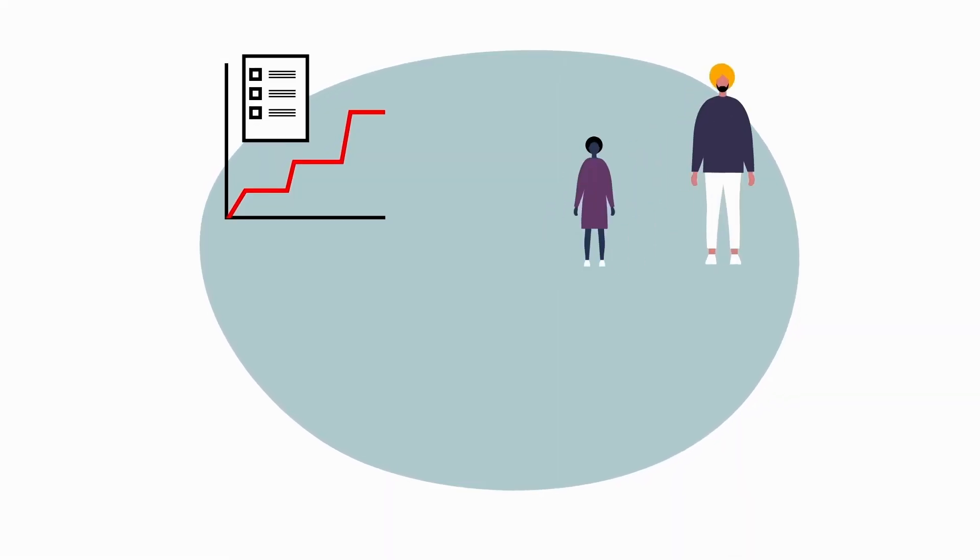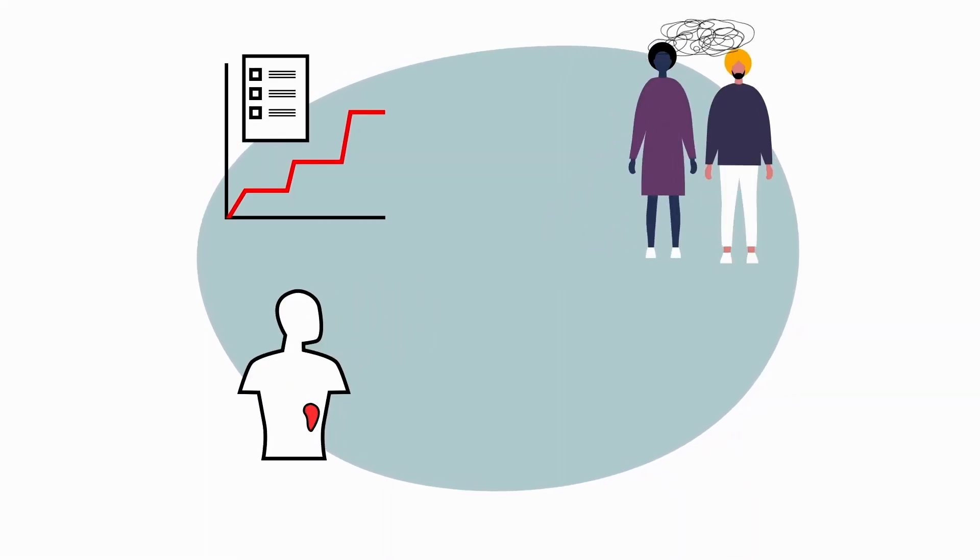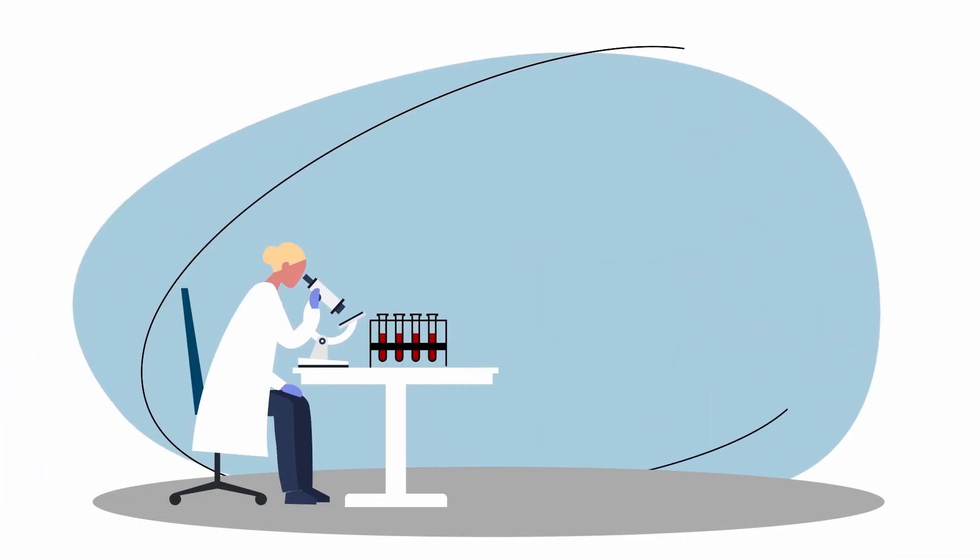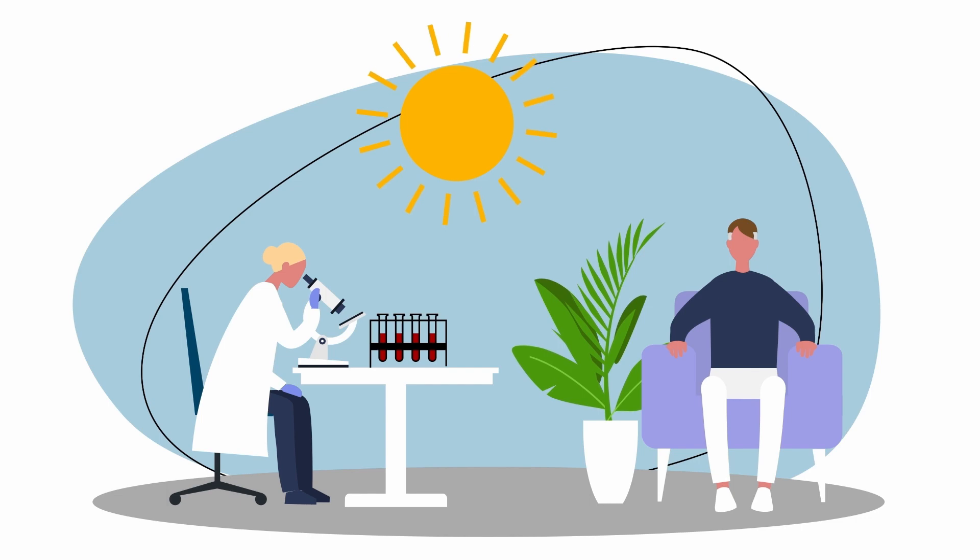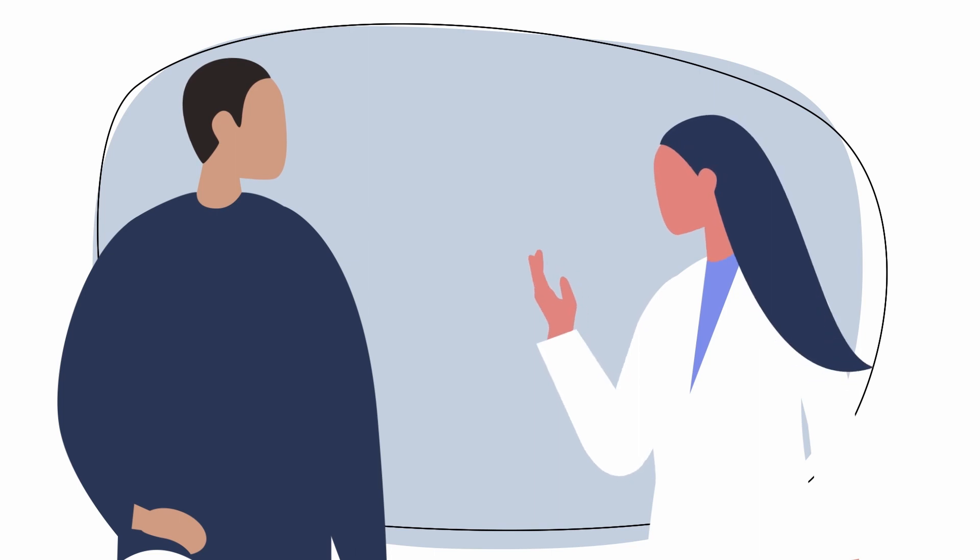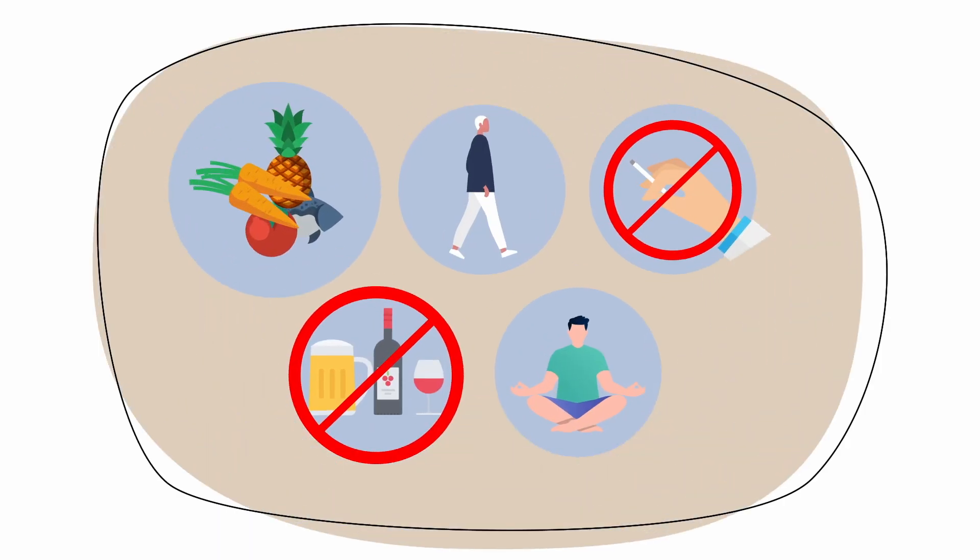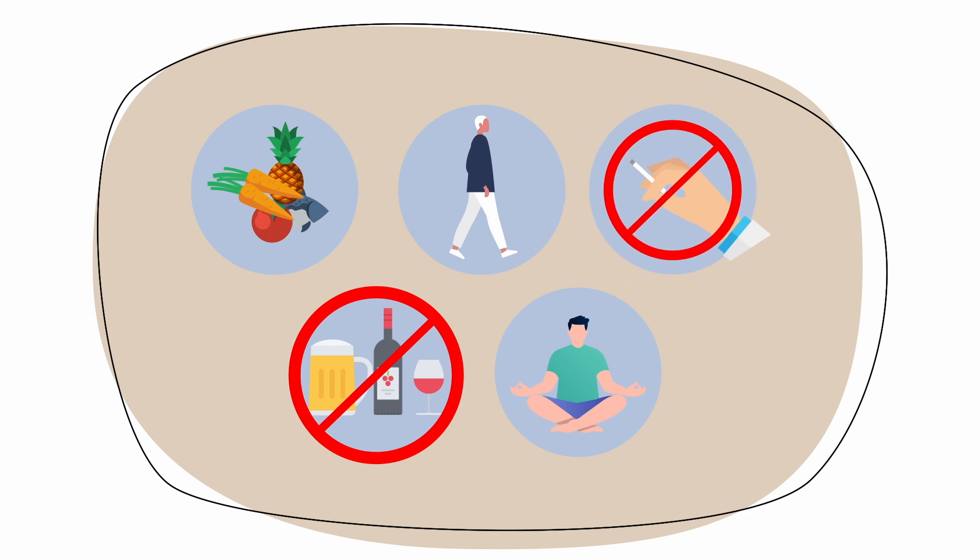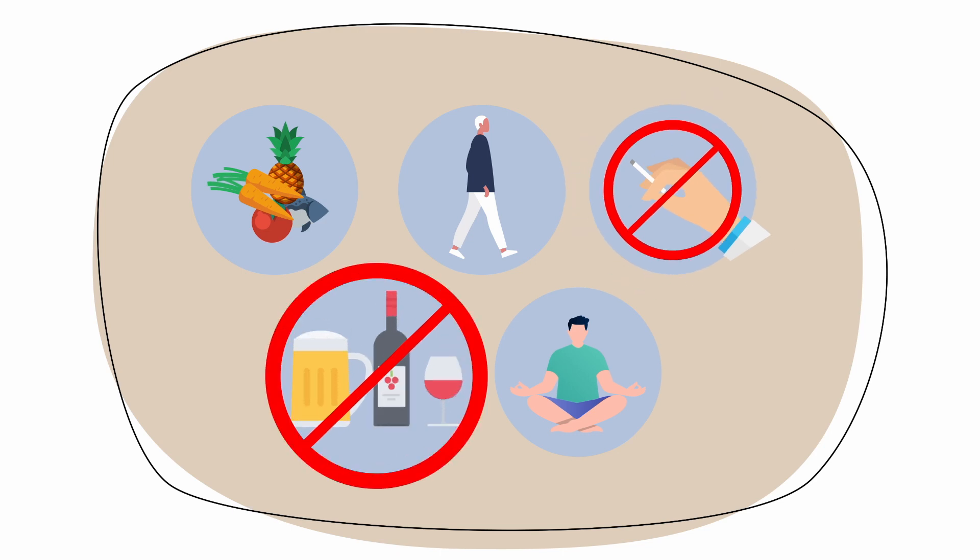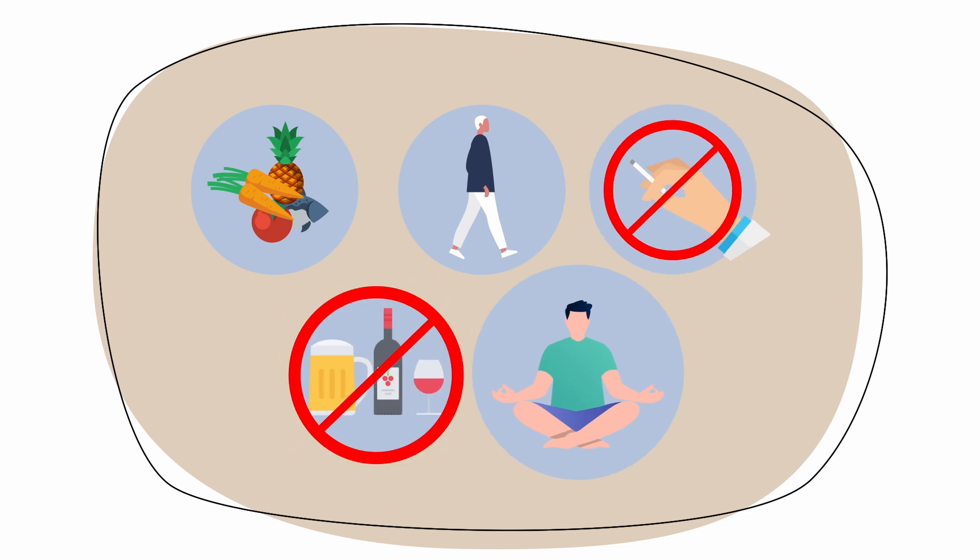Sometimes during active surveillance, people worry if enough is being done. Remember that you are being closely watched and your doctor will make sure you get treatment when and if you need it. Even though you are not receiving treatment, there are things you can do for your health, such as eating healthy foods, exercising, not smoking, reducing alcohol, and taking care of your mental health.